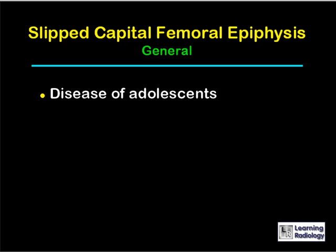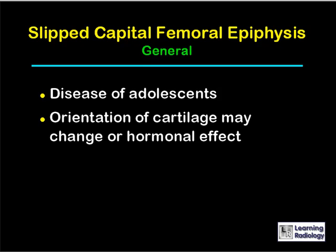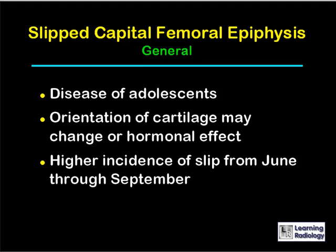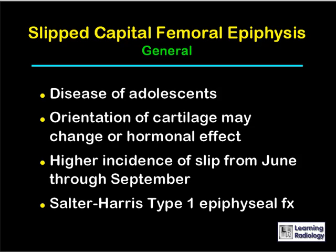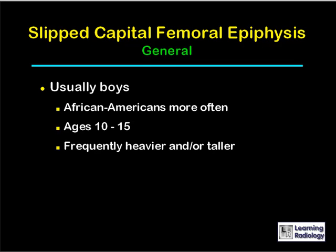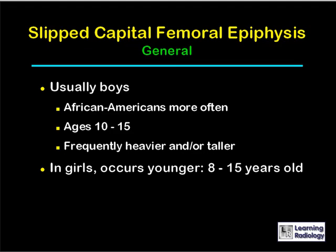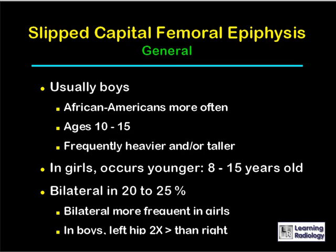Slipped capital femoral epiphysis, or SCFE, is a disease of adolescence. This may be due to a hormonal effect occurring in adolescence — some postulate a reorientation of cartilage at that age. There is a higher incidence of SCFE from June through September. It is a Salter-Harris type 1 epiphyseal fracture. SCFE usually affects boys, African Americans much more commonly, between the ages of about 10 to 15. Affected individuals are frequently heavier and/or taller than their counterparts. In girls it occurs at a younger age, usually starting around 8, and it can be bilateral in about 20 to 25% of cases.